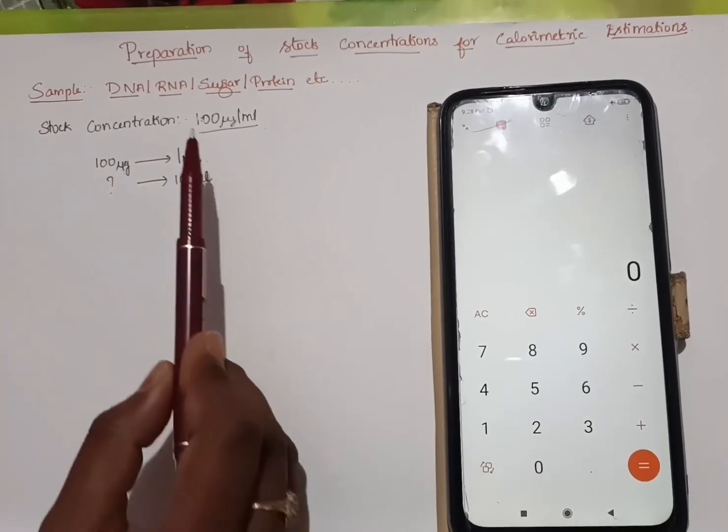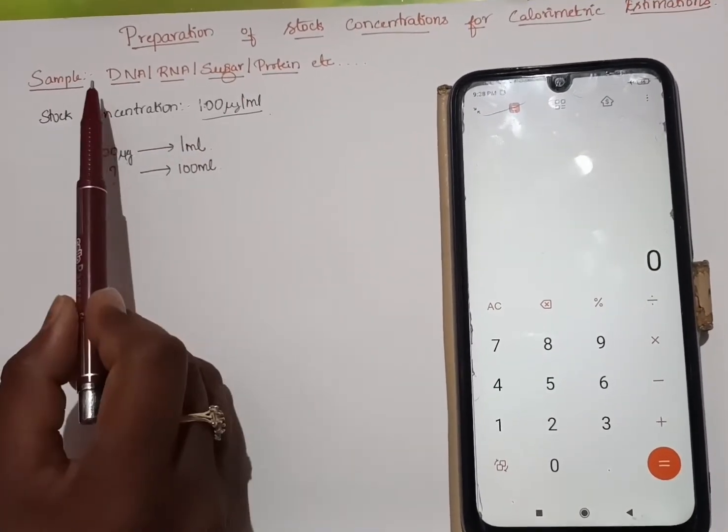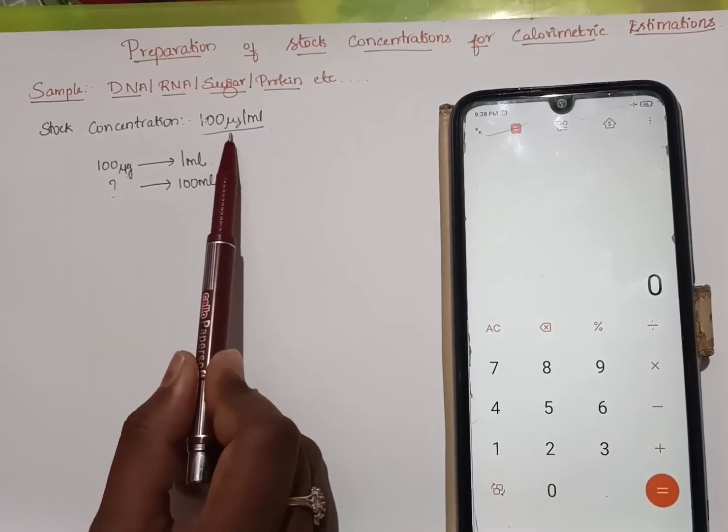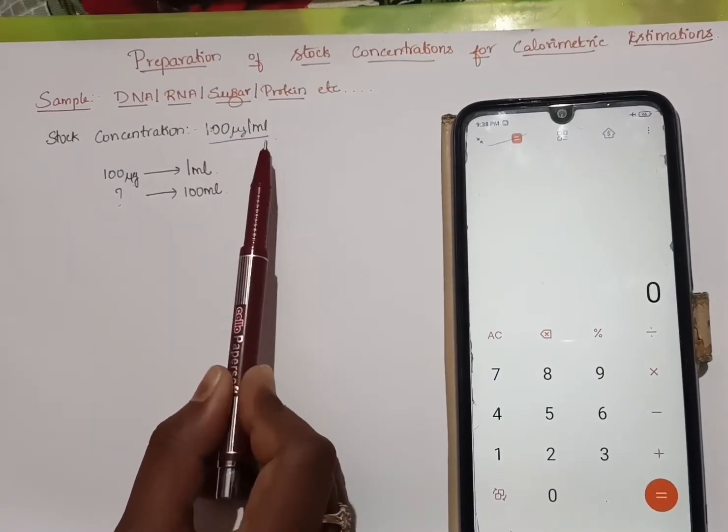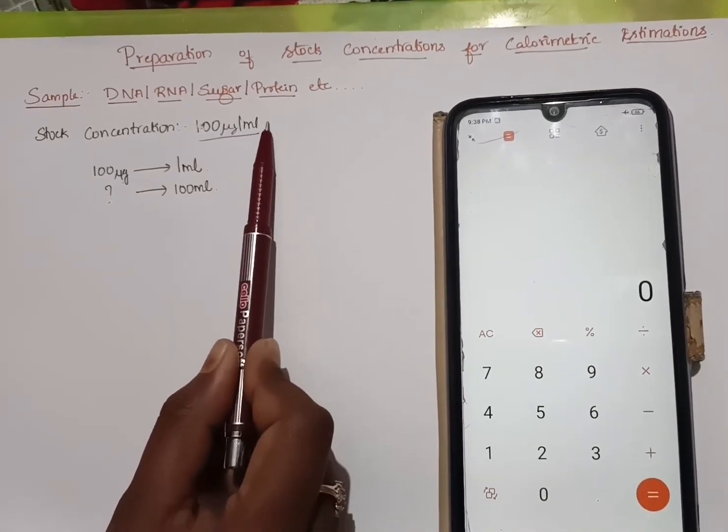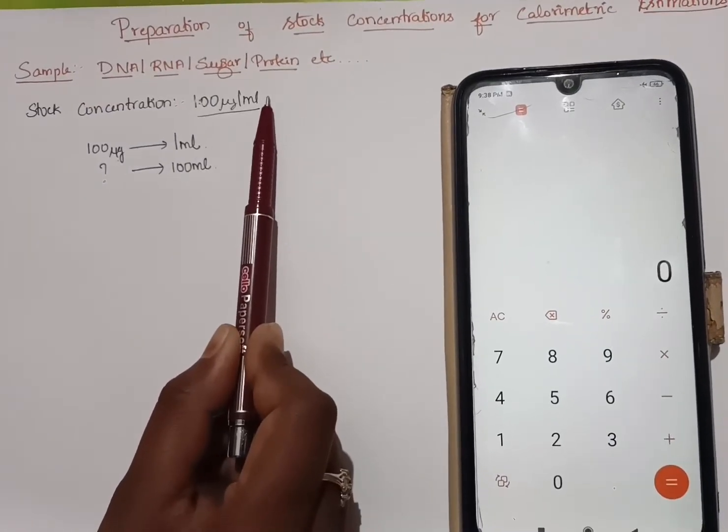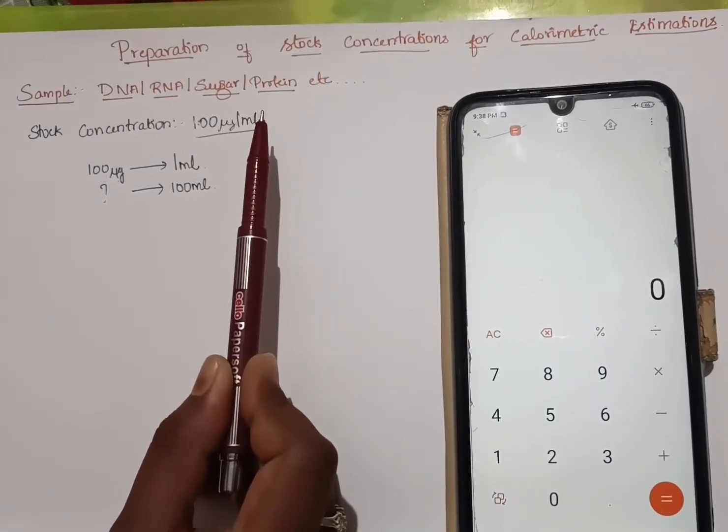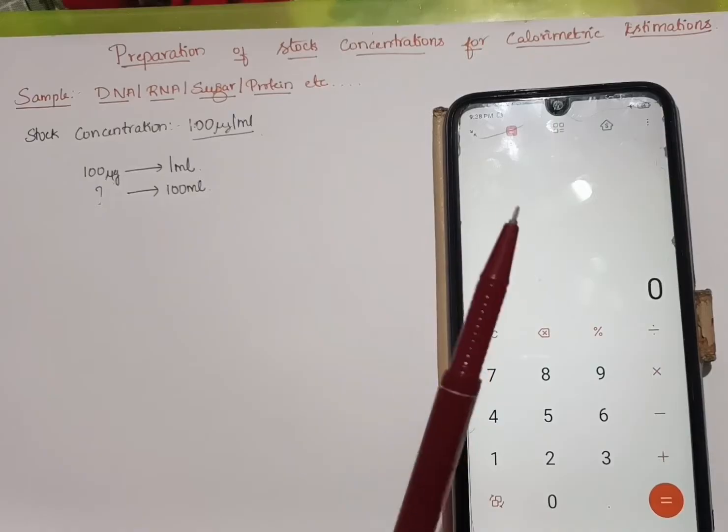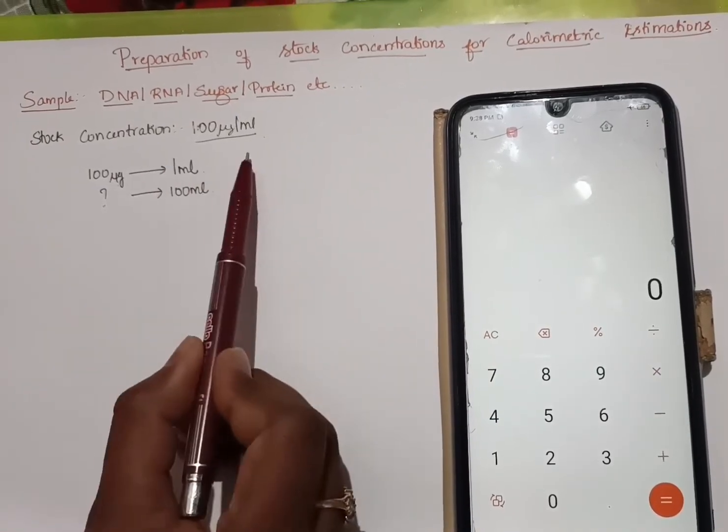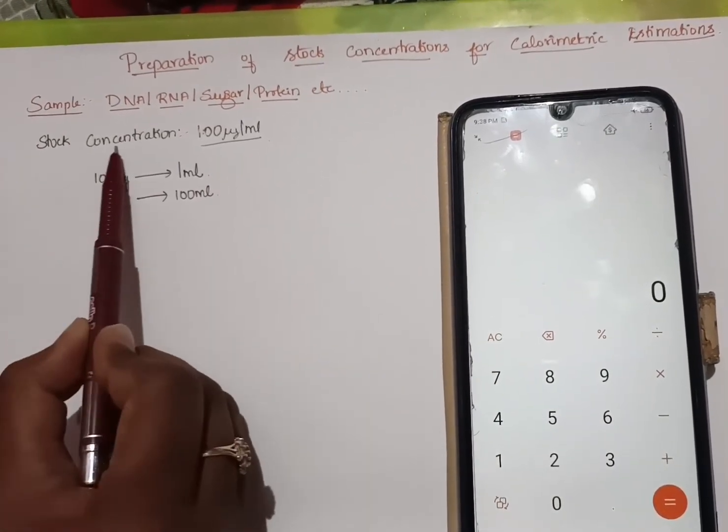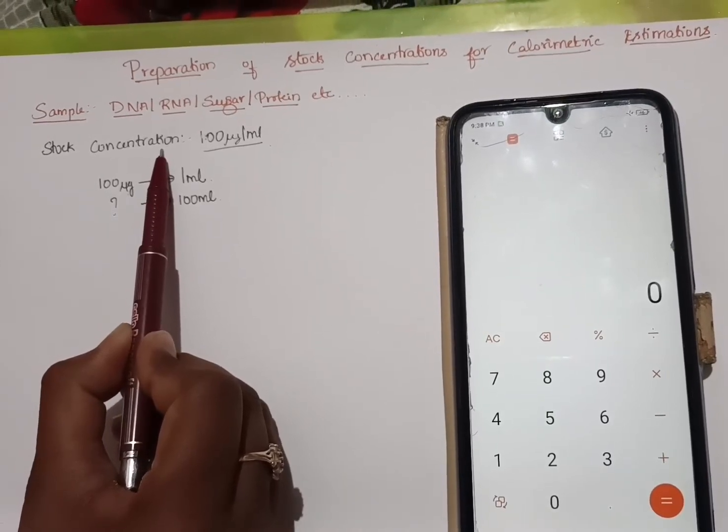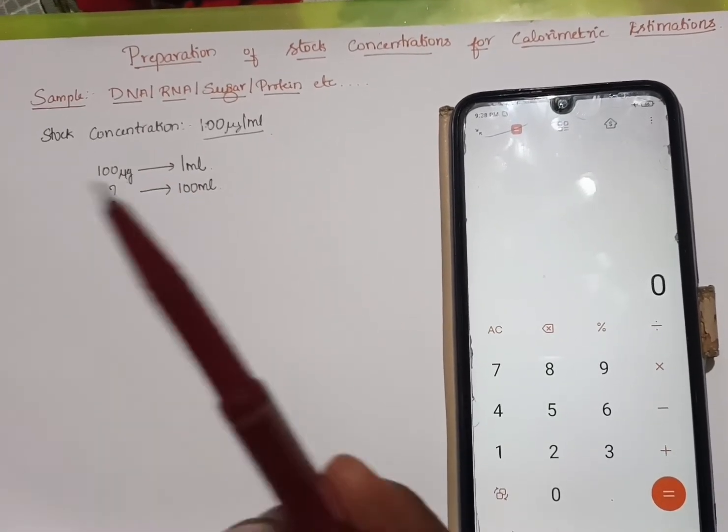Say for example, I need a stock concentration of this sample as 100 microgram per ml. But 1 ml of the sample is not enough for my complete experiment. So I will have to prepare more of its volume. For my experiment, I need 100 ml of my stock concentration. So for this, how do I prepare?